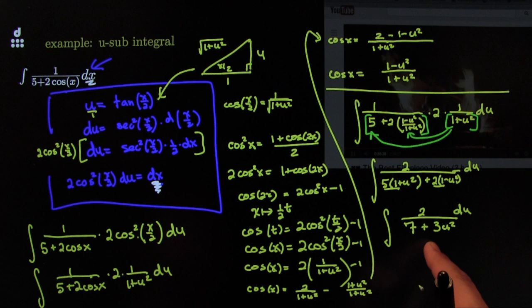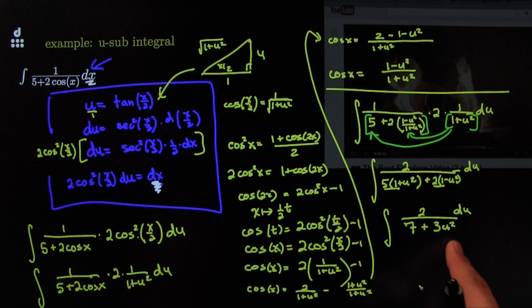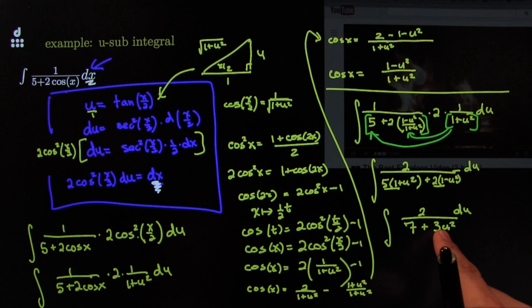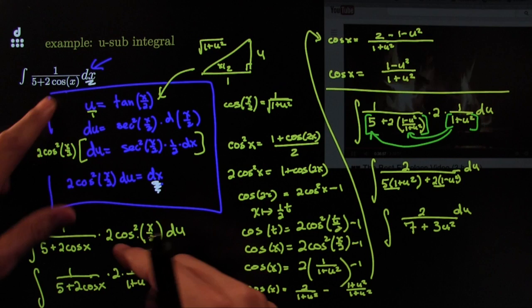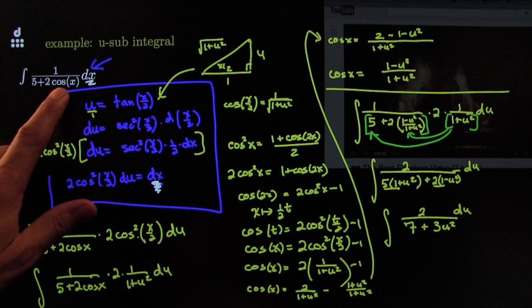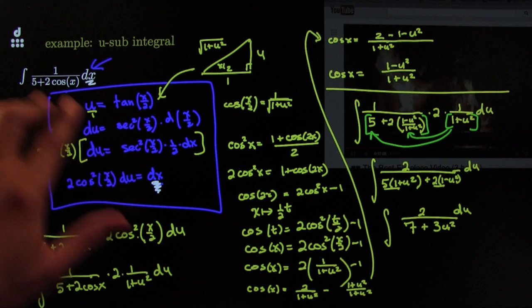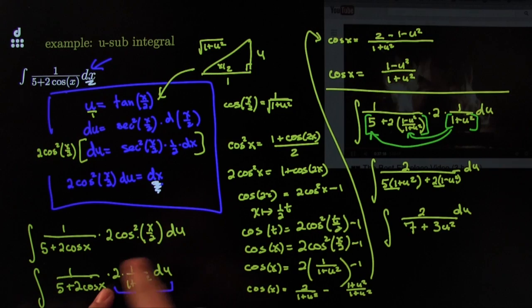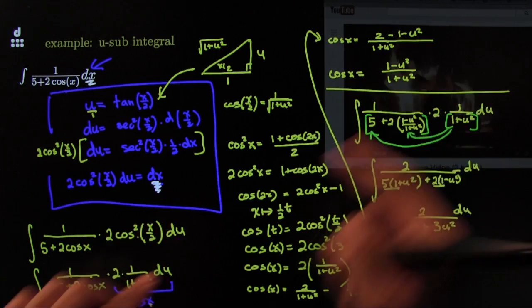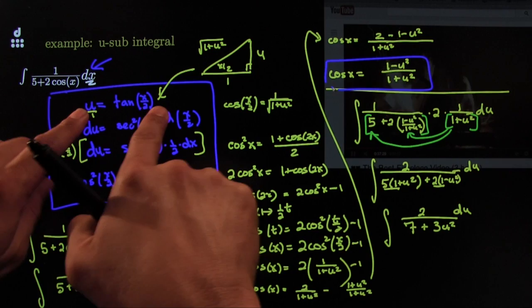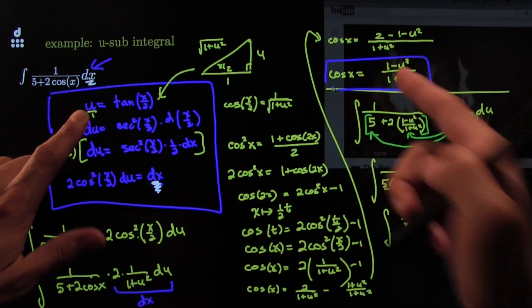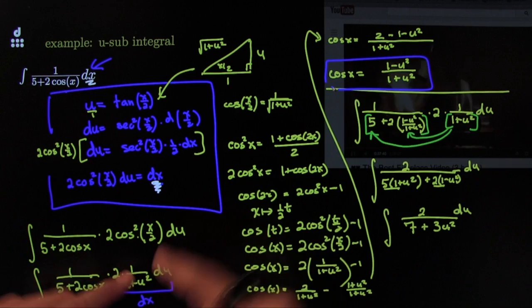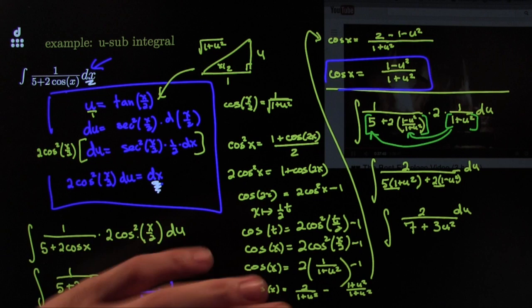Before going on, I should point out: there's a big family of problems like this one that can all be done using the famous Weierstrass substitution. You can usually tell them because they have a mix of cosines and sines where the coefficients or angles don't match. For all of these, this part of the dictionary is always the same — dx is always that expression, and cosine x always equals (1 minus u squared)/(1 plus u squared), regardless of what the original problem looked like.